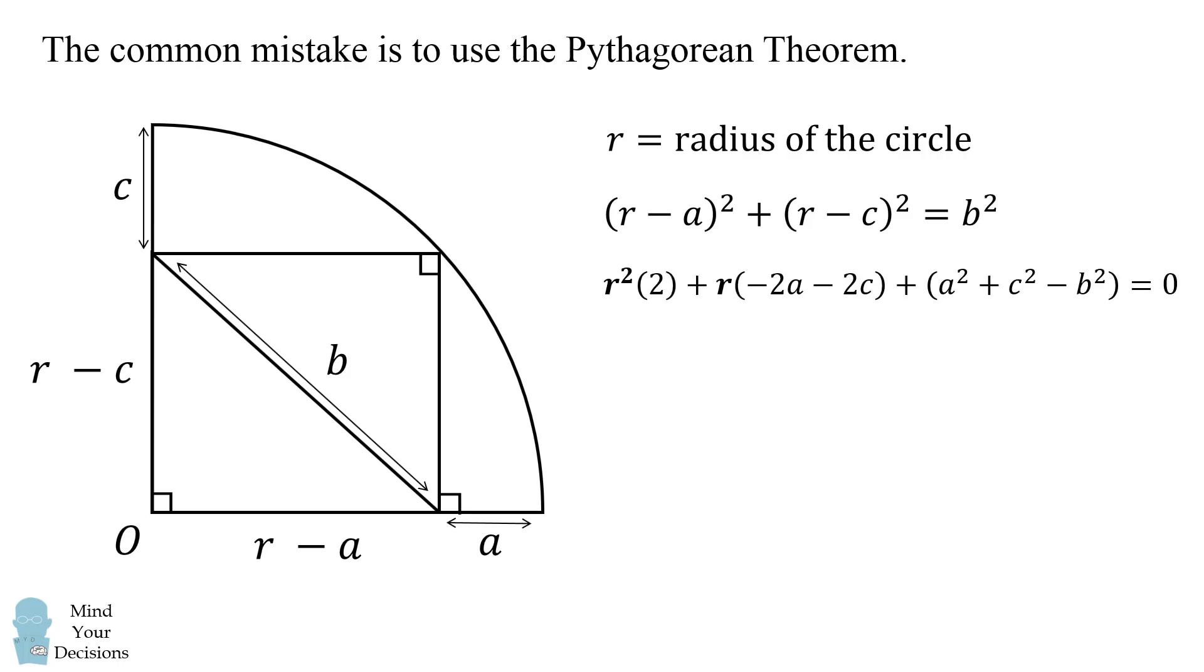We can then expand this out into a second degree equation in r. We can then solve for r using the quadratic formula and only retaining the positive square root to get a positive value for the radius.